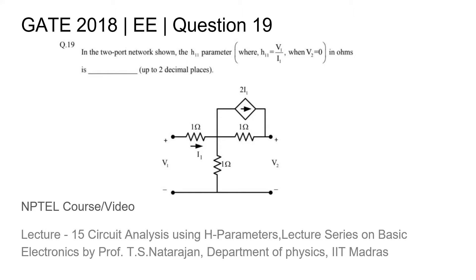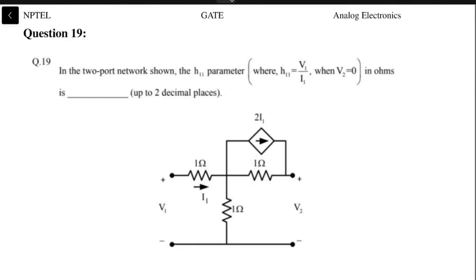Underneath the question, you will find the title of the NPTEL course or video relevant to this topic. In this question, we are asked to find the h-parameter h11, which is v1 by i1 when v2 is zero.